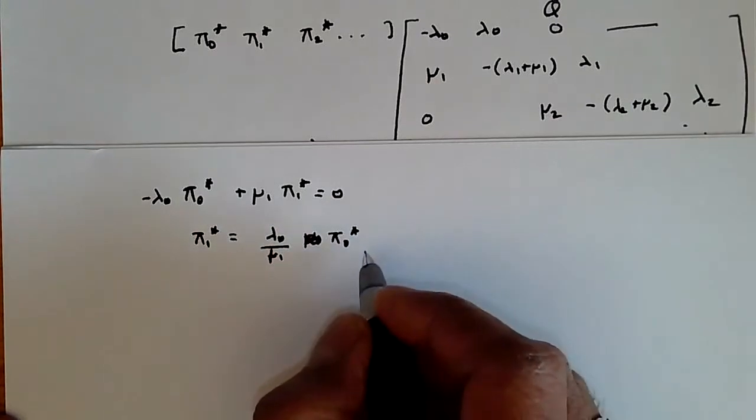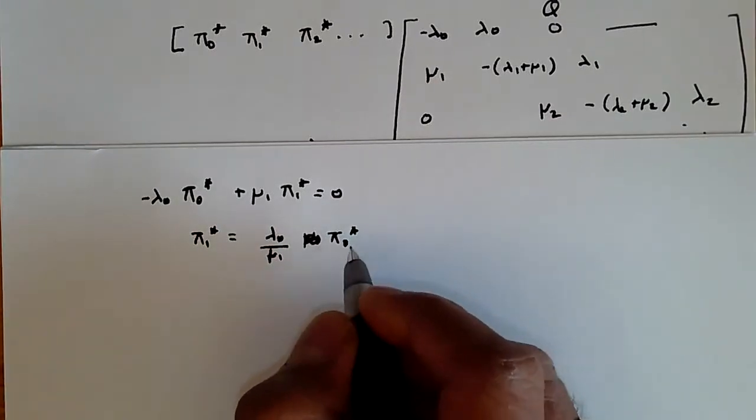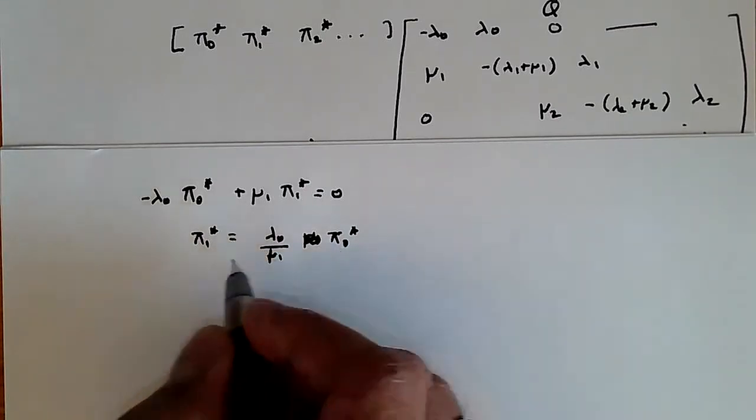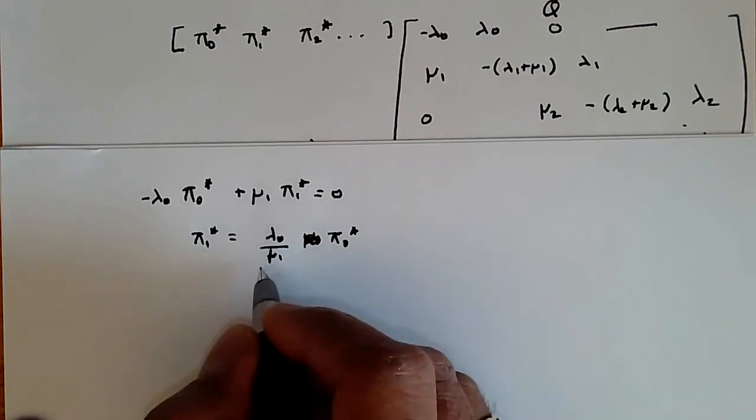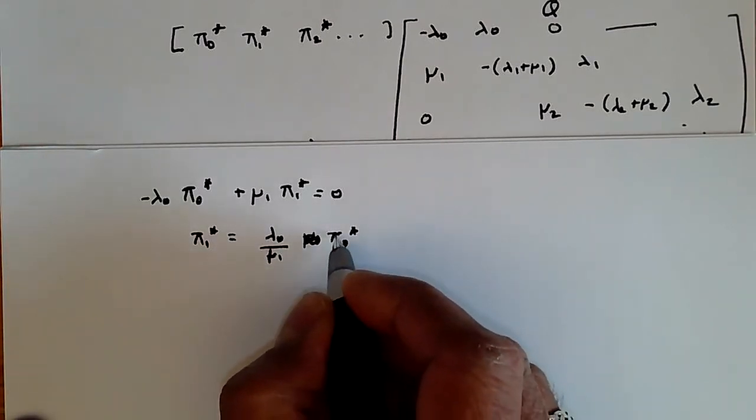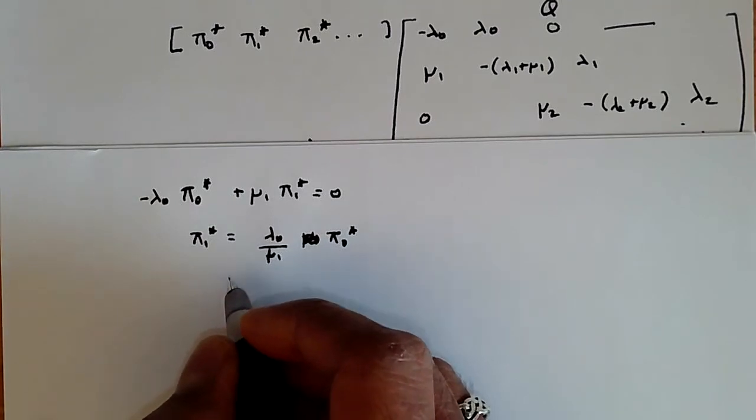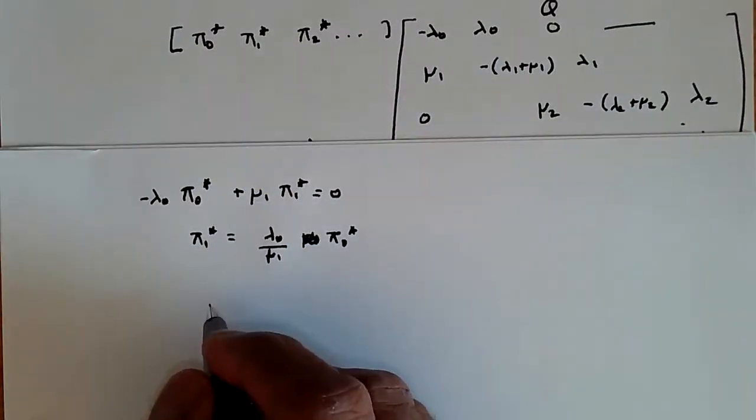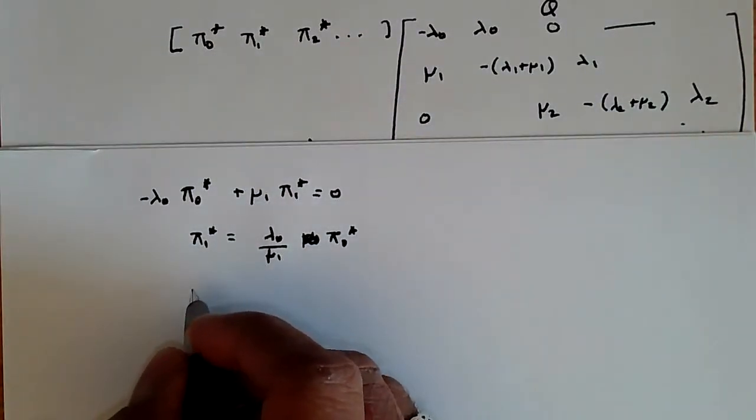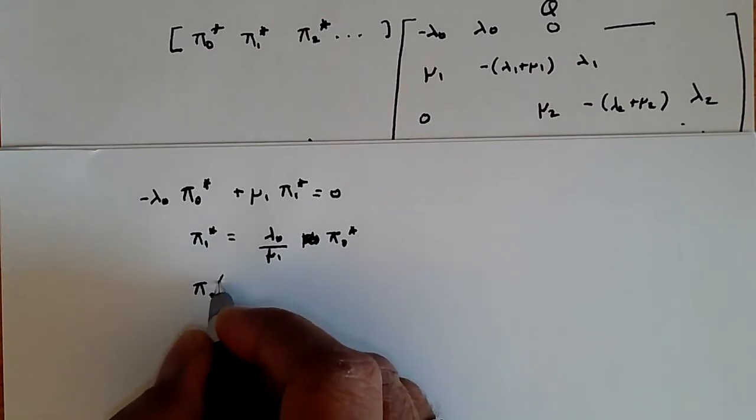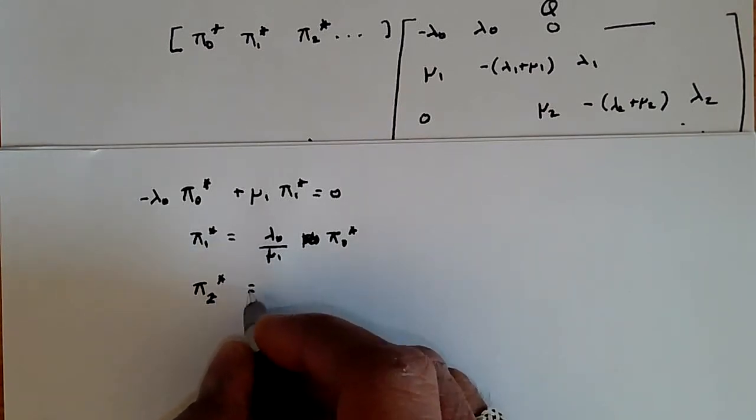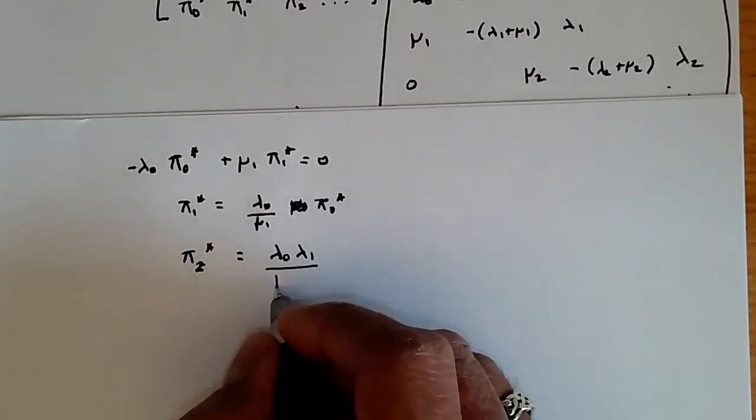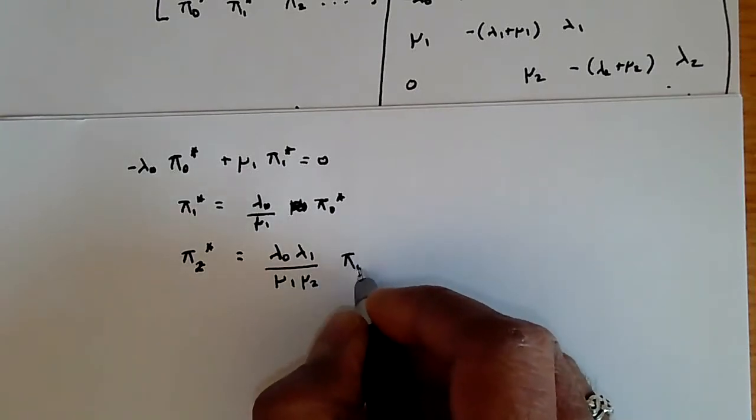If we know the probability of being in state zero in steady state, we know how to get to the steady state for π₁. It's just multiply this probability π₀* by λ₀/μ₁. Now we can substitute this into the second column. If we do that with a little bit of manipulation, we find that π₂* is given by λ₀λ₁/(μ₁μ₂) times π₀*, which has this nice little pattern going.